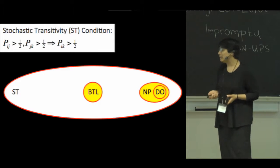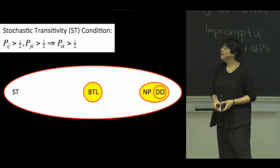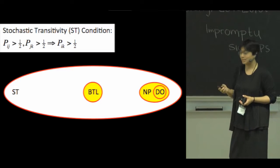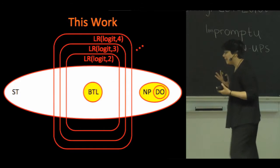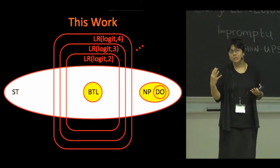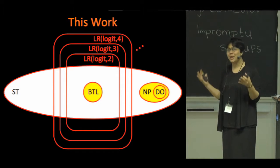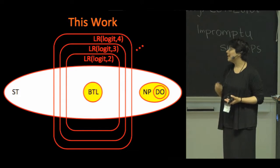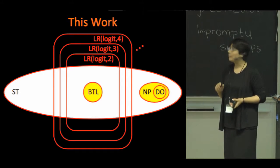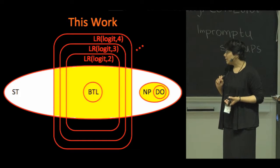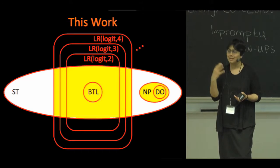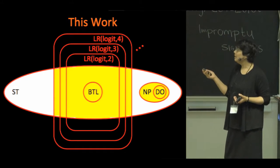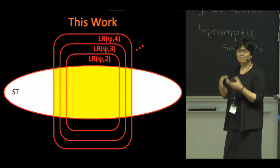We restrict ourselves to preference models that satisfy stochastic transitivity, because outside this, minimizing the pairwise disagreement error is hard even under exact knowledge of P. Notably, the BTL and noisy permutation models are also stochastically transitive. What we do in this work is define a new family of conditions on the pairwise comparison model, which we call low rank preferences — preference matrices that have low rank under a suitable link transform. We propose a new algorithm called low rank pairwise ranking and show that it allows recovery of a good ranking for a much broader class of conditions than previously known, encompassing the BTL class under the logit link but being far more general.